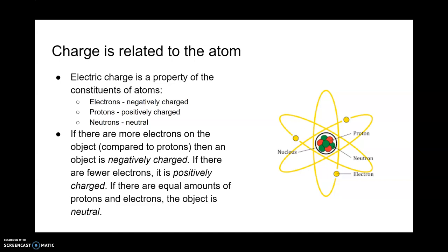If we have an object and there are more electrons overall for that object, it is negatively charged. If there are fewer electrons compared to protons, it is positively charged. If you have an equal amount of protons and neutrons, it is neutral.